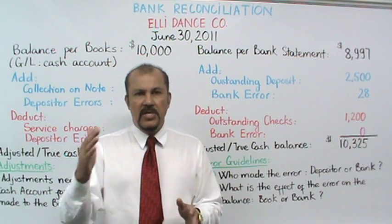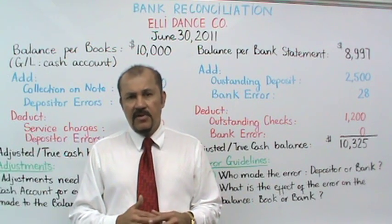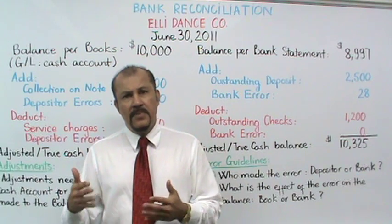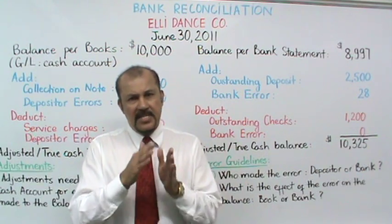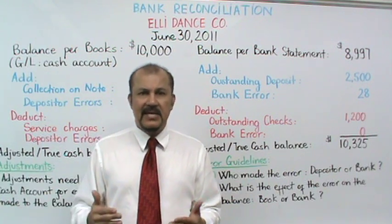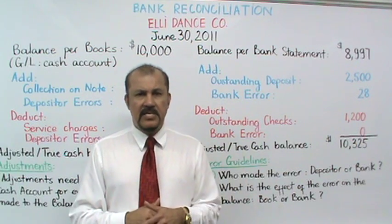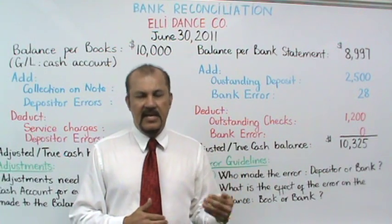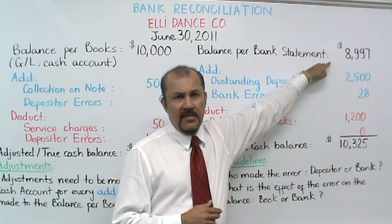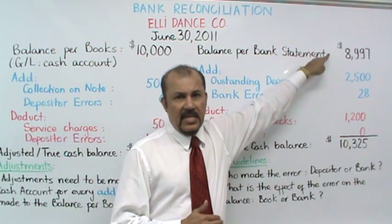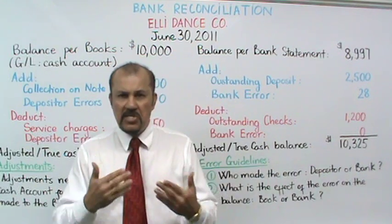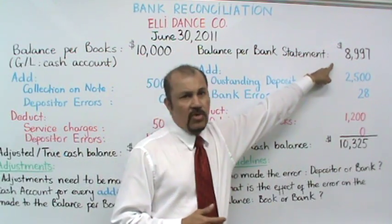Any transactions that take place after the banking day is over are reflected in the next banking day. Even though the bank may stay open physically until 7 or 8 p.m. on a Friday, any transactions after 4 p.m. would be reflected in the next banking day, which is typically Monday — not Saturday, not Sunday. So as far as the bank is concerned, L.E. Dance Company made this deposit on Monday, July 3rd, not in June. Therefore, the $2,500 deposit made on June 30th evening is not reflected in the $8,997 bank balance, but it is reflected in the $10,000 book balance. As part of our reconciliation process, we need to add the $2,500 to the bank statement balance.